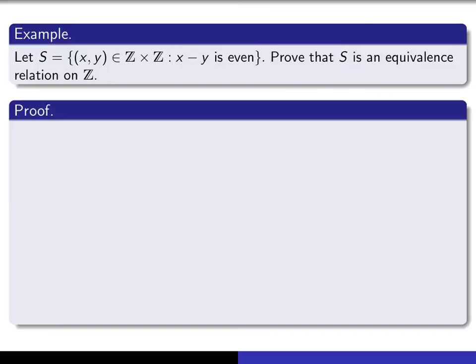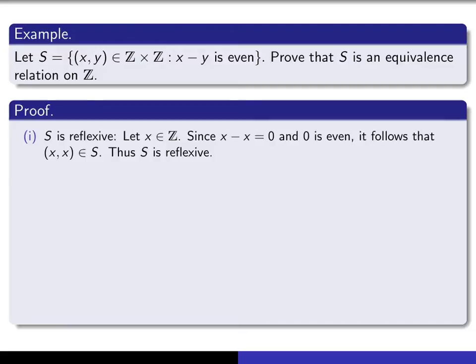Here's the proof that it's reflexive. Let X be an element of Z. I have to deduce that (X, X) lies in the relation, meaning I have to verify that X minus X is even. Since X minus X equals zero, and zero is even, it follows that (X, X) is in the relation S, and thus S is reflexive.